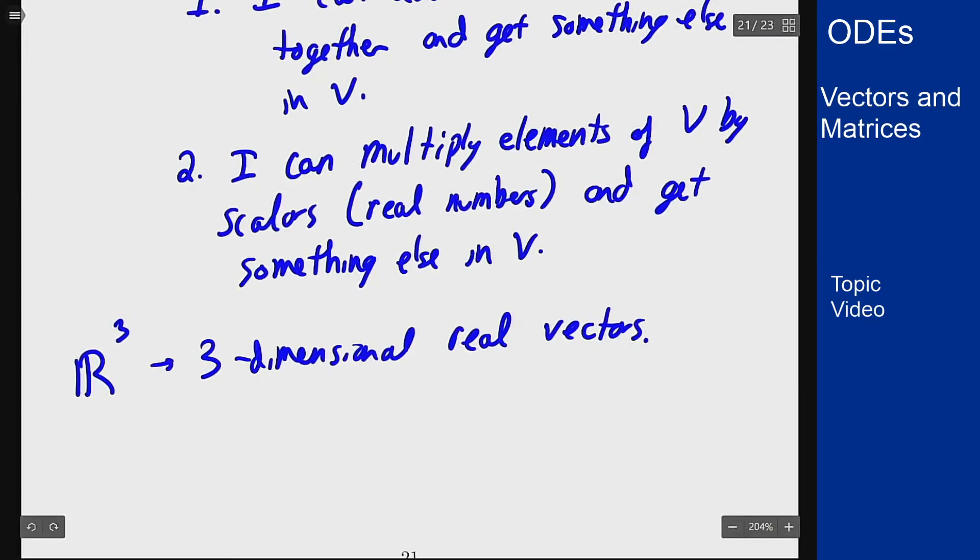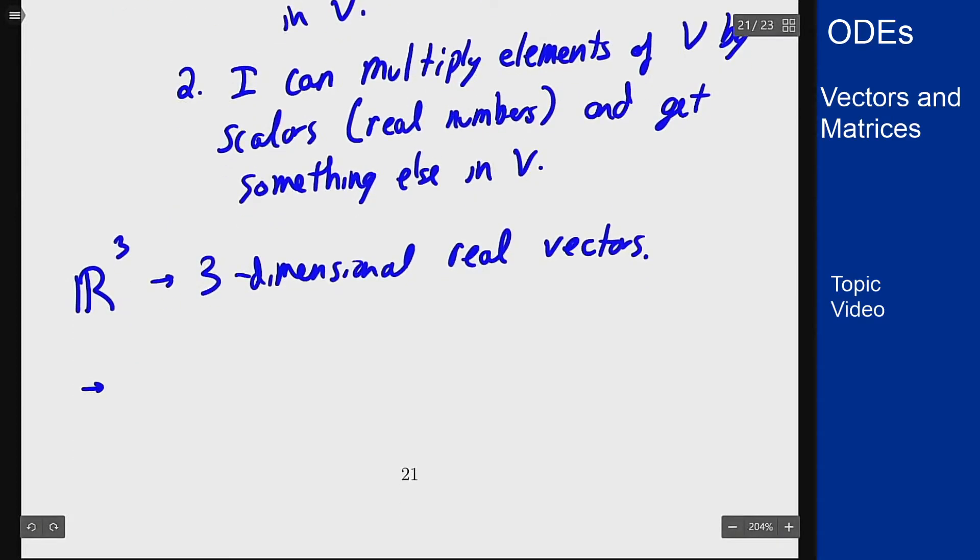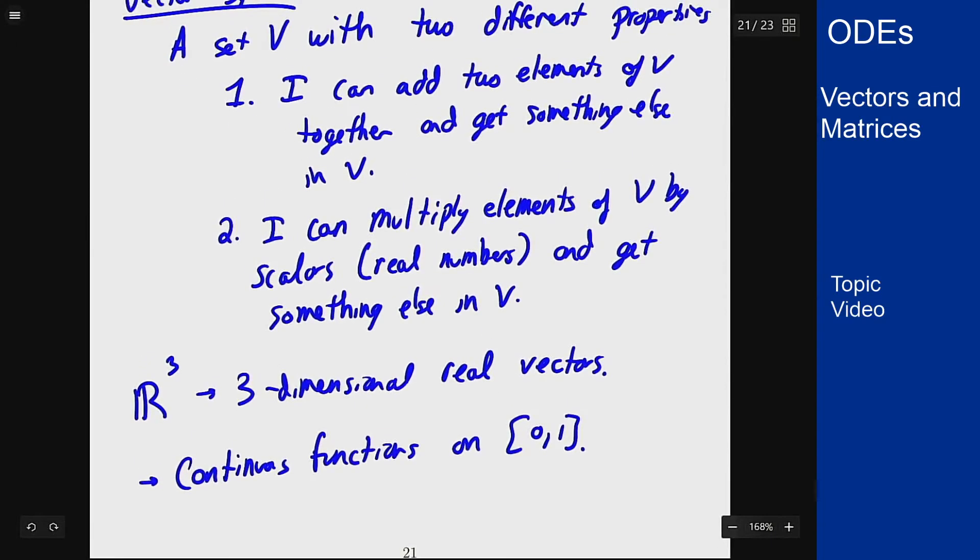An example that's not like this is continuous functions on the interval from 0 to 1. I can't write this out as a set of numbers, but if I take continuous functions I can add them together and get another continuous function. Also, if I take a continuous function and multiply it by 2 or 3 I get another continuous function. So it satisfies the same two properties even if it's not just a set of numbers in brackets.